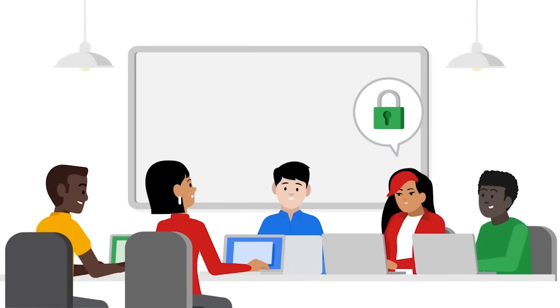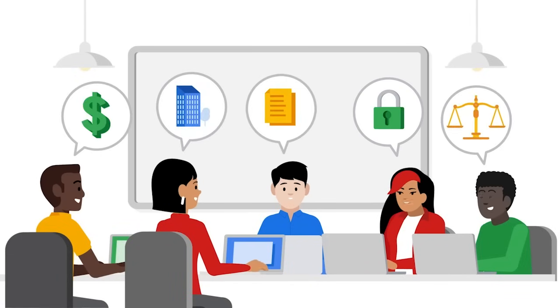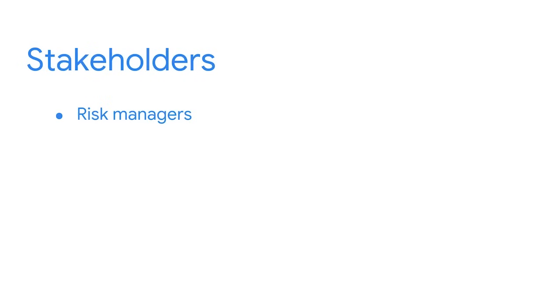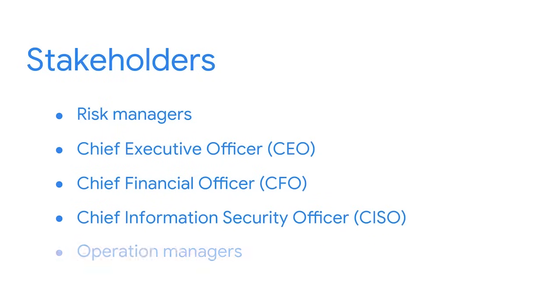Security threats, risks, and vulnerabilities can affect an entire company's operations — from financial implications to the loss of customer data and trust. Each stakeholder has a responsibility to provide inputs on the various decisions and activities of the security team. There are many stakeholders that pay close attention to the security of critical organizational assets and data. We're going to focus on five: risk managers, the chief executive officer (CEO), the chief financial officer (CFO), the chief information security officer (CISO), and operations managers.